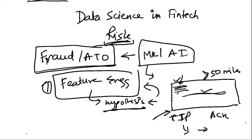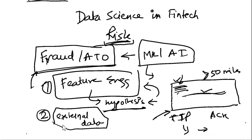The second most important thing is to be willing to use external data. Fraud never happens in a vacuum — someone committing fraud in one place is likely showing signs of fraud elsewhere. There's also a network effect. For fraud specifically, external data appends from bureaus like Axciom, FICO scores, Experian, and social media scraping are very important for fraud and account takeover risk use cases.